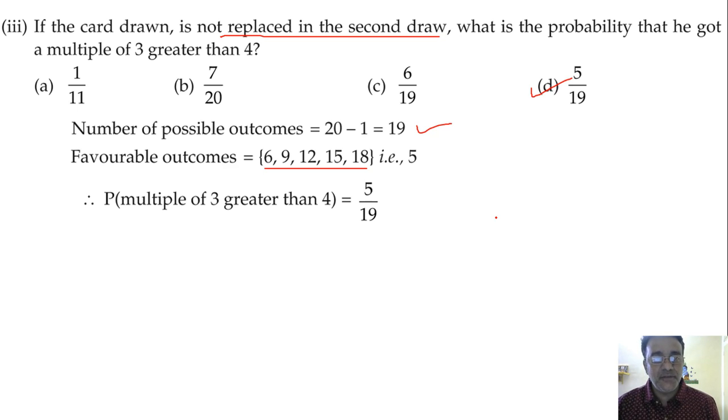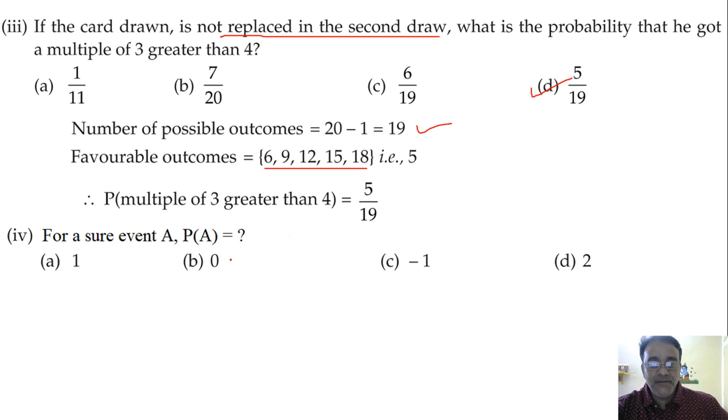So we'll move towards question number 4. For a sure event A, what is the value of P? What is the probability for a sure event? 1, right. What is the probability of an impossible event? Sure event ka probability 1 hai. What is the probability for impossible event? 0. Very good.